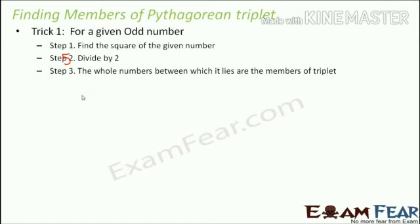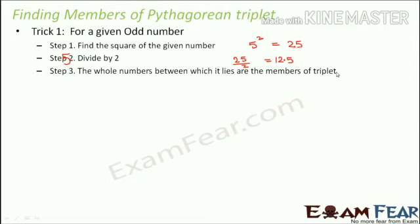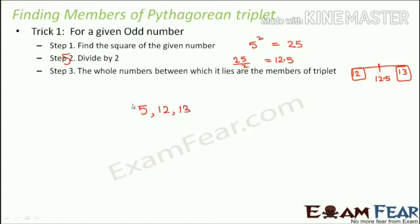Step one: find the square of the given number. So 5² = 25. Step two: divide it by 2. So 25 ÷ 2 = 12.5. Step three: the whole numbers between which it lies are the other members of the triplet. 12.5 lies between 12 and 13, so 12 and 13 are the other members. Therefore, the final triplet is 5, 12, 13.